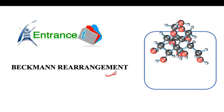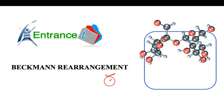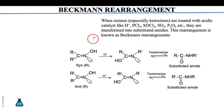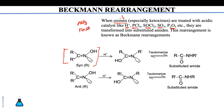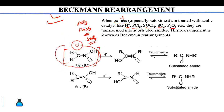Let's start with the Beckmann rearrangement, which is a part of rearrangements in ketones — specifically oximes. An oxime is RC double bond NOH. When treated with acid such as H⁺, PCl₅, SOCl₂, SO₃, P₂O₅, AlCl₃, Lewis acid, FeCl₃, or SnCl₄, it will undergo the Beckmann rearrangement.